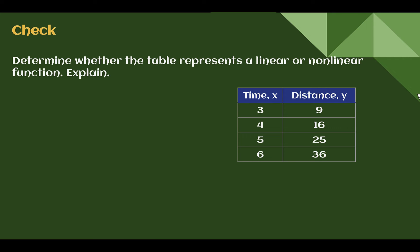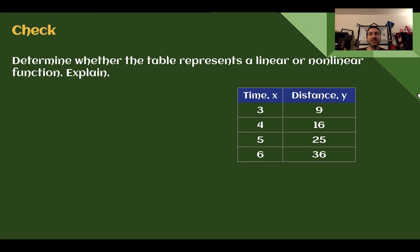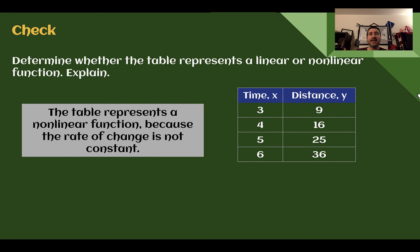Check your understanding: determine whether the table represents a linear or non-linear function and explain. The answer is non-linear because the rate of change is not constant. From 9 to 16 is up 7; from 16 to 25 is up 9; from 25 to 36 is up 11. Not a constant rate of change, so this would be non-linear.